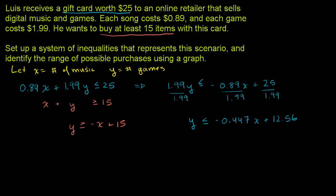That blue constraint, that we can't spend more than $25, when we put it in slope-intercept form turns into y ≤ -0.447x + 12.56. And the second constraint, that he wants to buy at least 15 items, turns into y ≥ -x + 15. So let's graph the two inequalities.